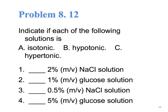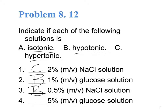Let's define these solutions as isotonic, hypotonic, or hypertonic. As we recall from slide 46, the concentration of red blood cells is 5% glucose and 0.9% sodium chloride. So a solution that is more concentrated than that will be hypertonic. For glucose, we want 5%, so a lower concentration would be hypotonic. For sodium chloride, we want 0.9%, so a lower value is still hypotonic. And for glucose at 5%, that is isotonic.